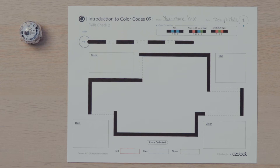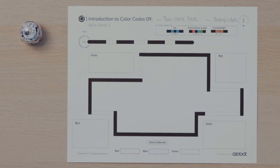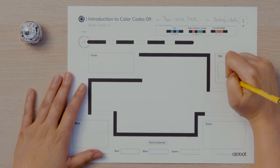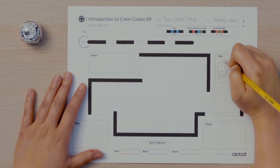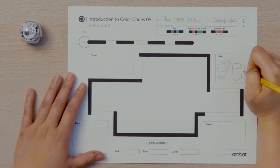Look at the activity sheet. There are four boxes around the outside of the path Ozobot will follow, labeled with a color: red, green, or blue. Look around the room you're in to find two to three items that are red, green, or blue for Ozobot to collect on its scavenger hunt. As I look around the room I am in, I see a backpack that has red on it and a red mug, so I will draw those two items in the box labeled red.